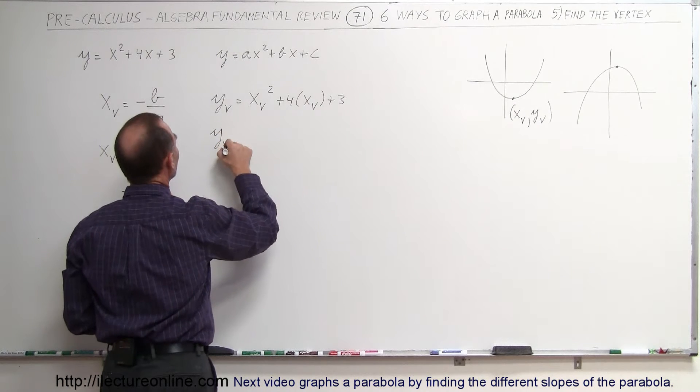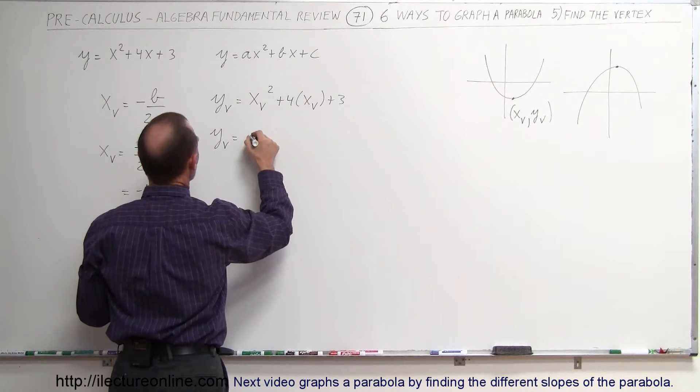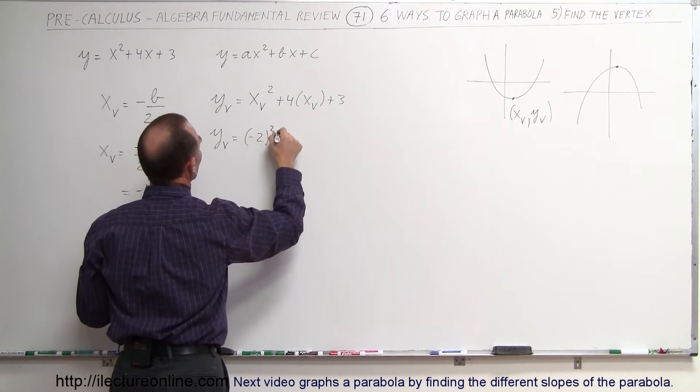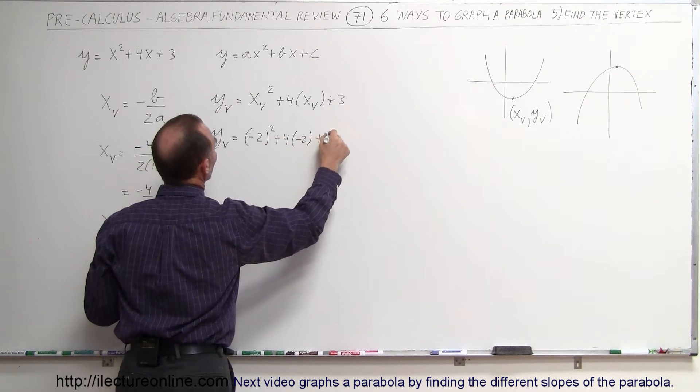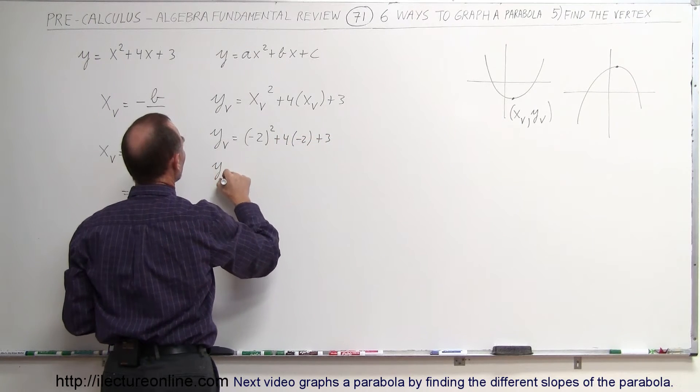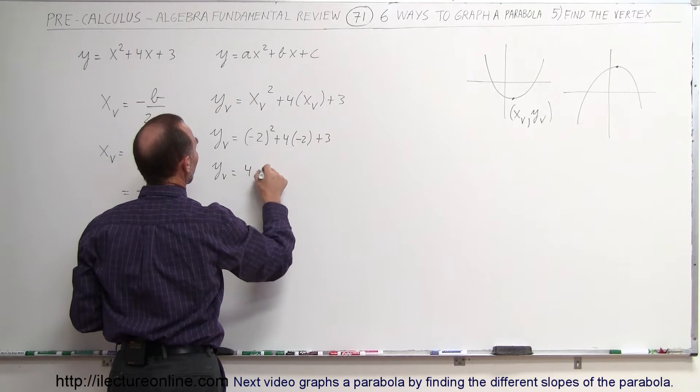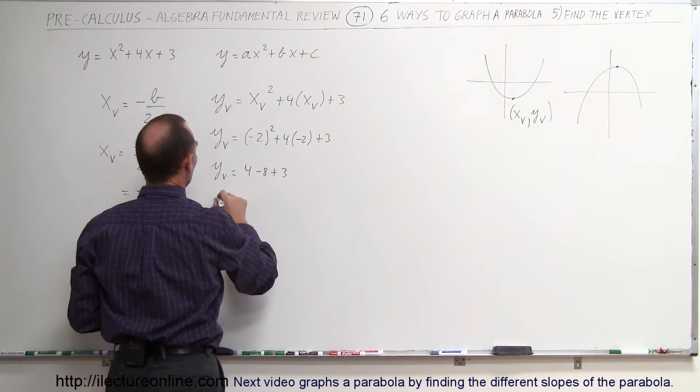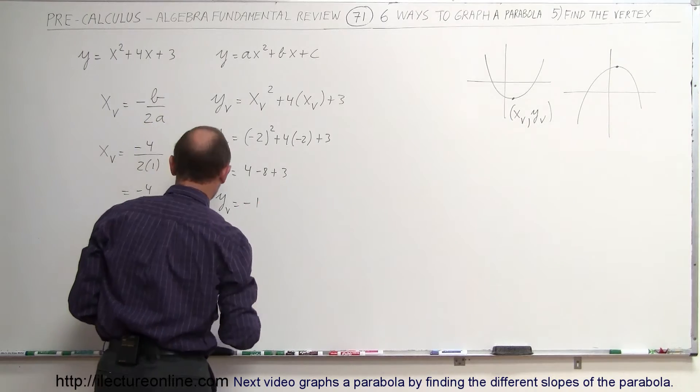So in this case, y sub v is equal to minus 2 quantity squared, plus 4 times minus 2, plus 3. So we get y sub v is equal to 4 minus 8 plus 3, or y sub v is equal to minus 1.